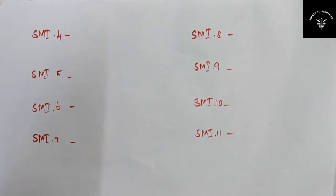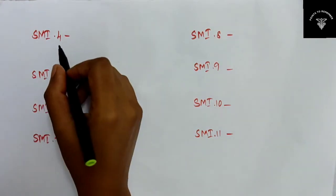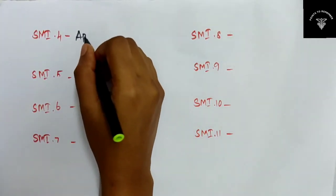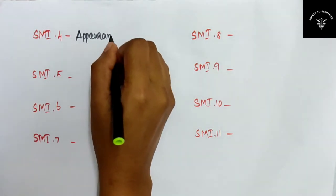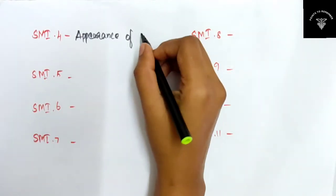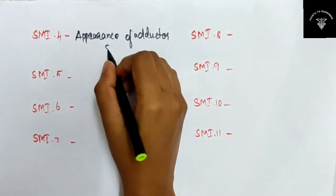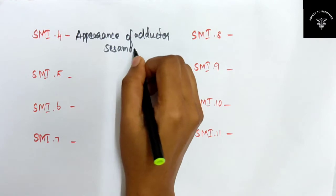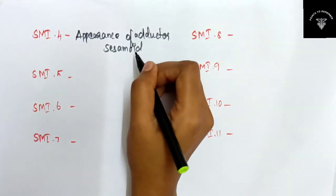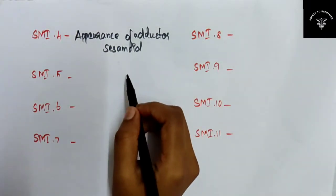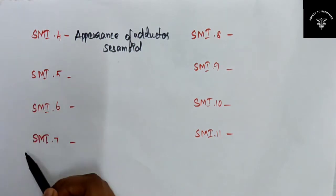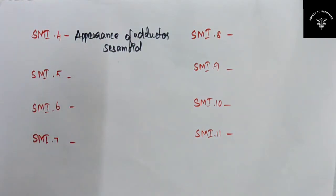The fourth skeletal maturity indicator is the appearance of the adductor sesamoid of the thumb — the same sesamoid bone we saw in the anatomy section. The next three skeletal maturity indicators (SMI 5, 6, and 7) are based on the capping of the epiphysis.